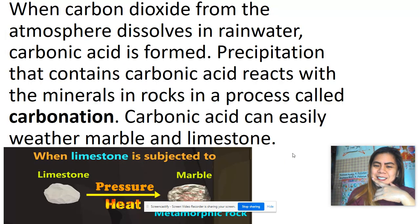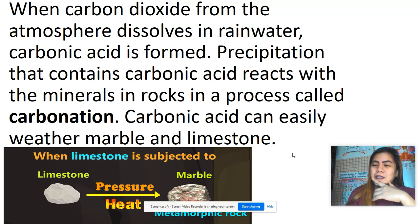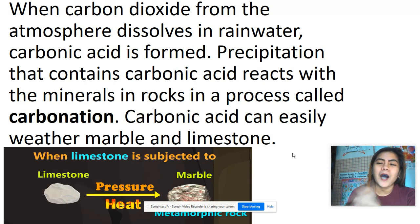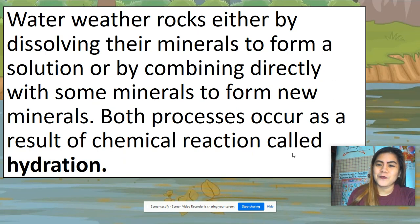Next is carbonation. When carbon dioxide from the atmosphere dissolves in rainwater, carbonic acid is formed. Precipitation that contains carbonic acid reacts with the minerals in rocks in a process called carbonation.